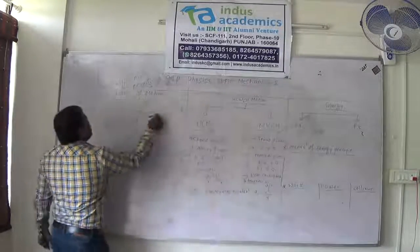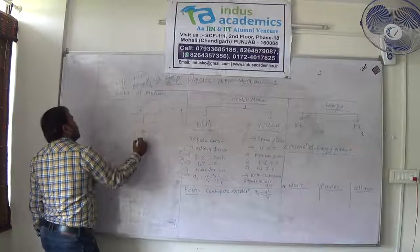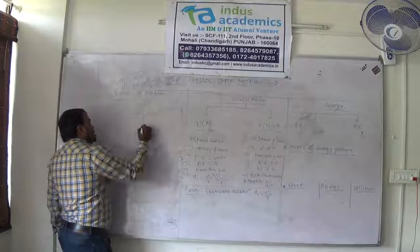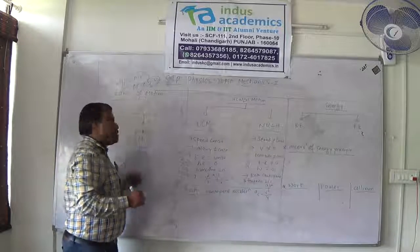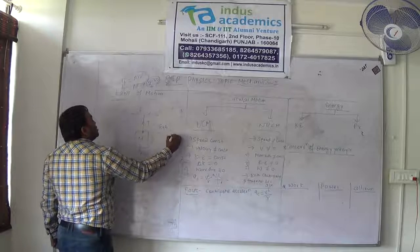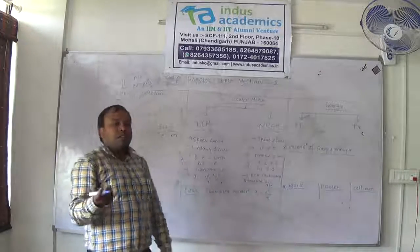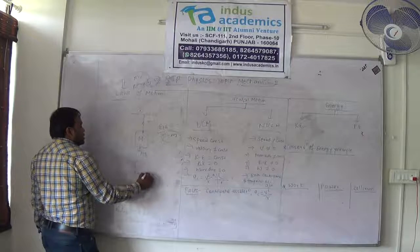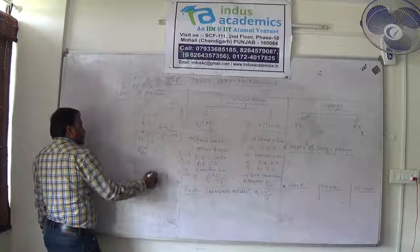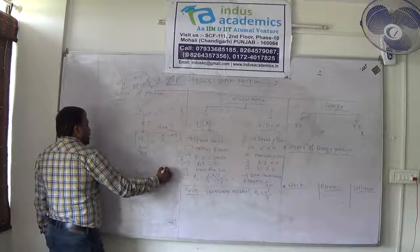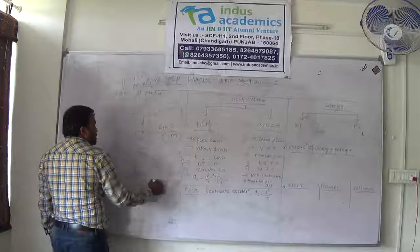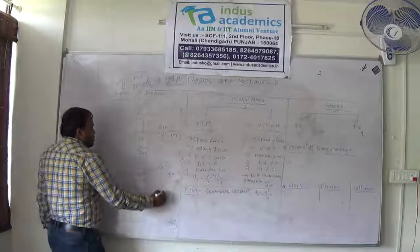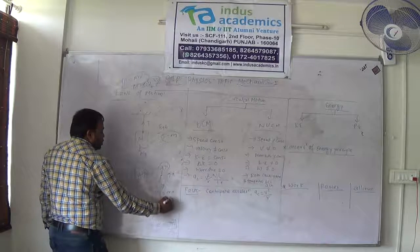Consider a body of total mass M hanging from a rope. Mg acts downward and the tension tries to resist. At equilibrium, T = Mg. Now if the body is climbing the rope with acceleration A upward, the net force equation is T minus Mg = Ma. So tension T = M(G + A), which is greater than Mg. Therefore, if the body is climbing up with acceleration, the tension in the rope increases.